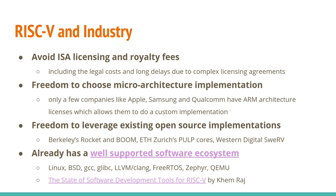RISC-V also gives companies freedom to choose the microarchitecture implementation. Only a few companies like Apple, Samsung, and Qualcomm have ARM architecture licenses that allow them to do custom implementations. Everyone else is just licensing cores, which doesn't give much room to differentiate their processor. Companies also have the freedom to leverage existing open source implementations — since the instruction set is open, there are several open source implementations such as Rocket and Boom out of Berkeley. ETH Zurich has the PULP team with cores like Ibex and Ariane. And RISC-V is doing really well in terms of software support.